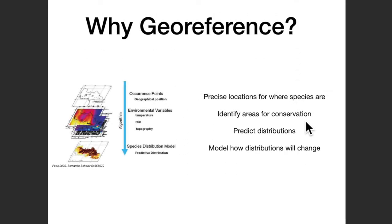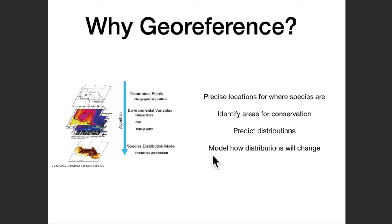Why do we need to georeference? Knowing the locations where species are can be very useful for identifying areas in need of conservation, predicting where species may occur like rare species, or to create models that predict how distributions of species might change over time.